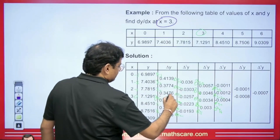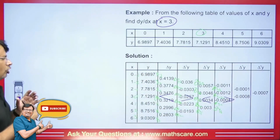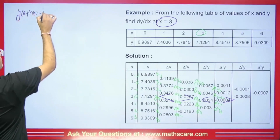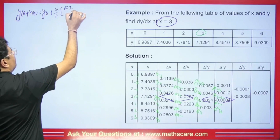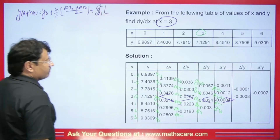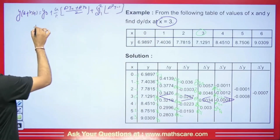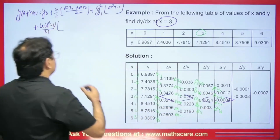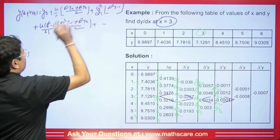When we take X = 3 as the center, the Sterling formula Y(A + HU) = Y₀ + (U/1!)·(ΔY₋₁ + ΔY₀)/2 + (U²/2!)·Δ²Y₋₁ + U(U²−1)/3!·(Δ³Y₋₁ + Δ³Y₀)/2 works here. We then differentiate it with respect to U, H comes forward, the Y₀ term becomes zero, 2U/2 gives U·Δ²Y₋₁, and the derivative of (U³−U)/6 is (3U²−1)/6·(Δ³Y₋₁ + Δ³Y₀)/2.